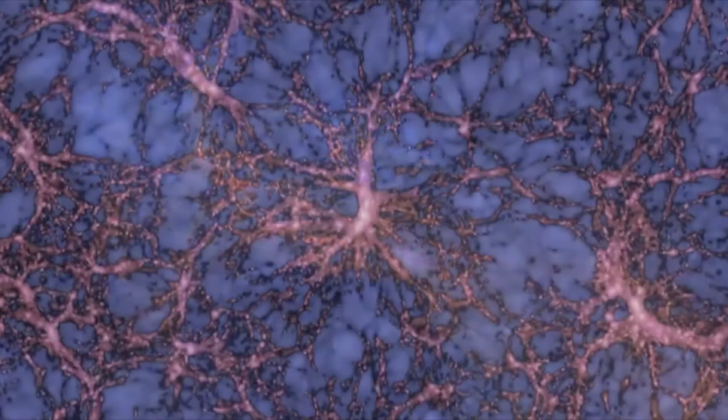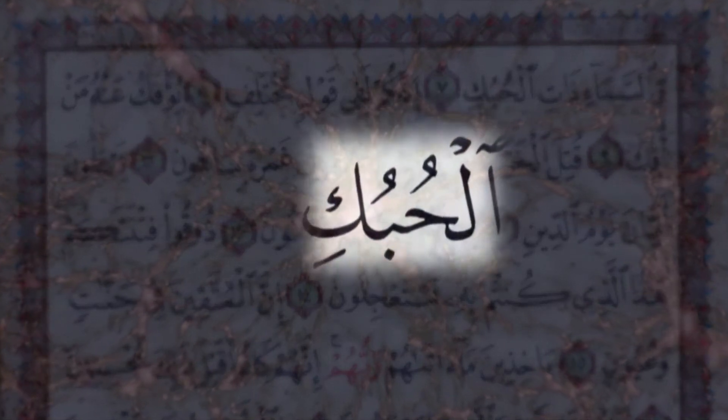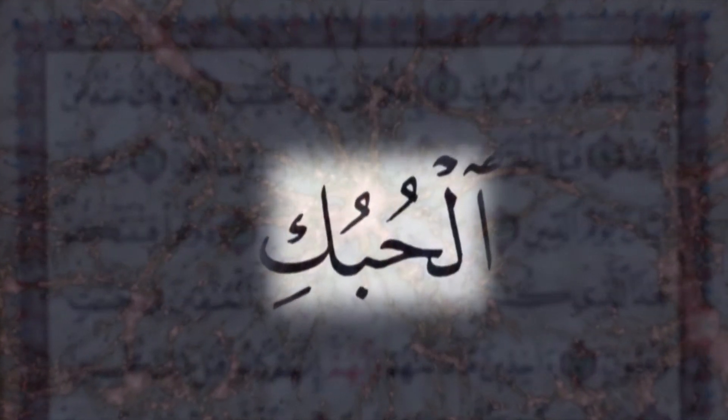NASA simulations showing how the cosmic web is structured are yielding spectacular results, all corresponding with the meaning and shadows of meaning of the single Quranic word al-hoboq, the space-time fabric.